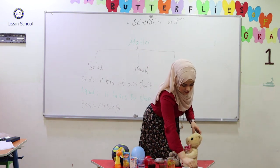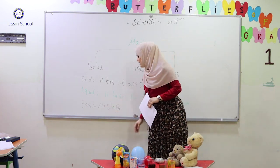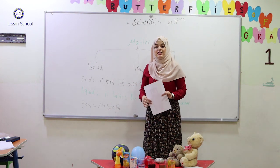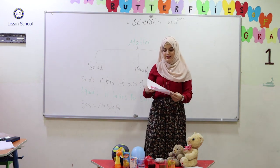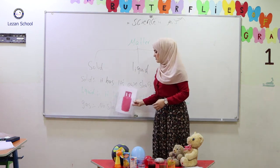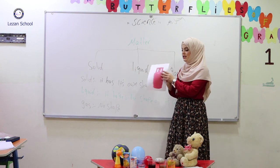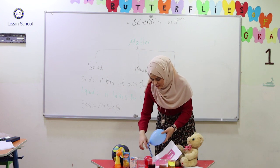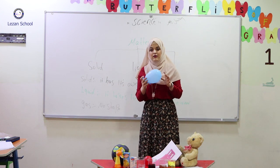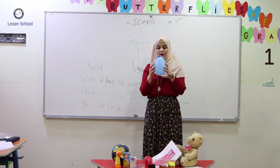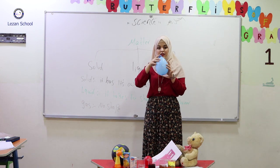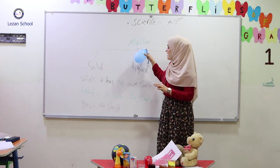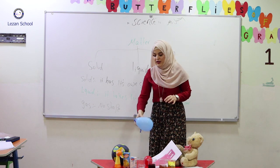And then we have gas. Gas — it doesn't have shape. For example, this is an example of gas. And also, we have this balloon. There is gas in it. This is the type of matter — gas.